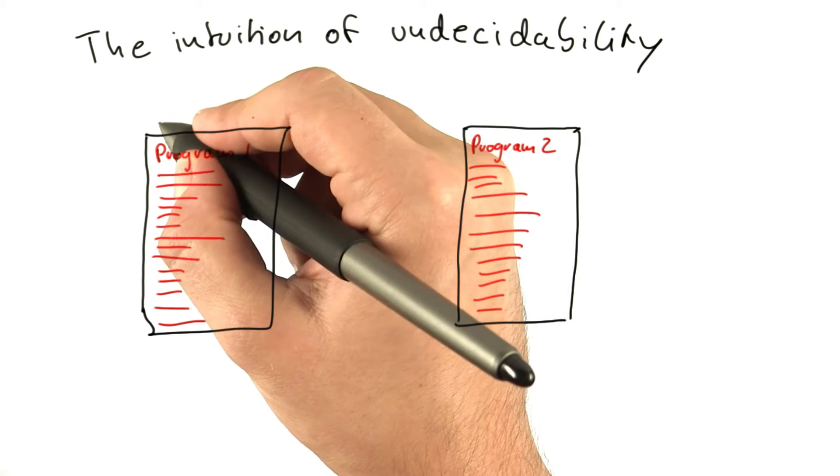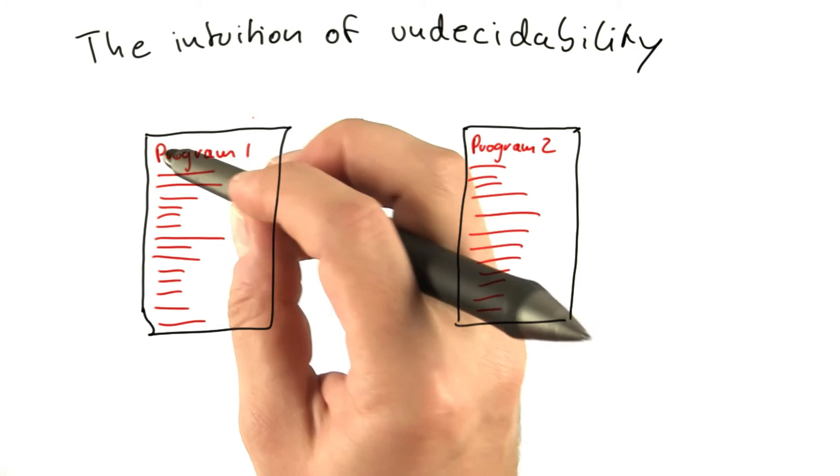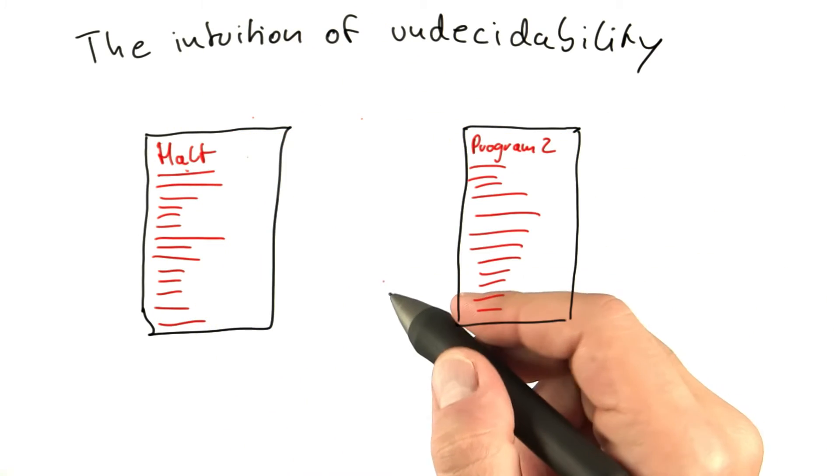So let's say this program here is supposed to solve the halting problem. So this would be the program HALT here.